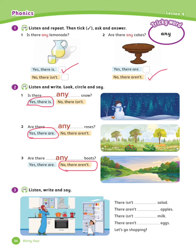Exercise number 3: Listen, write, and say. There isn't any salad. There aren't any apples. There isn't any milk. There aren't any eggs.